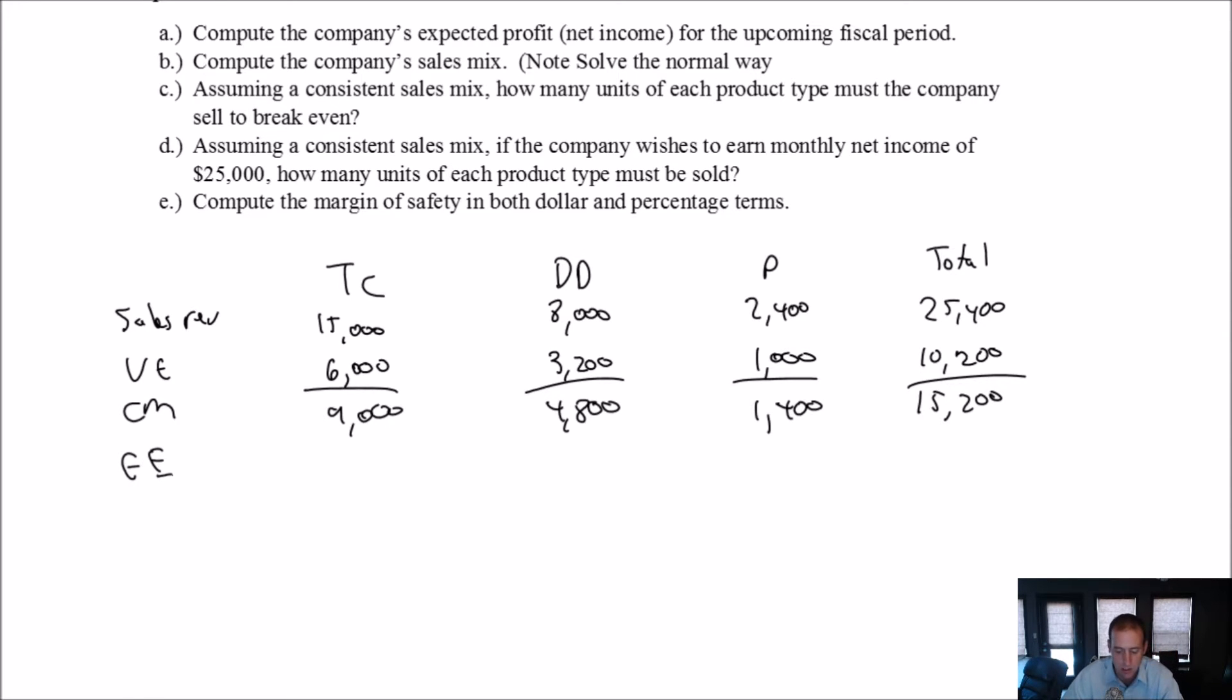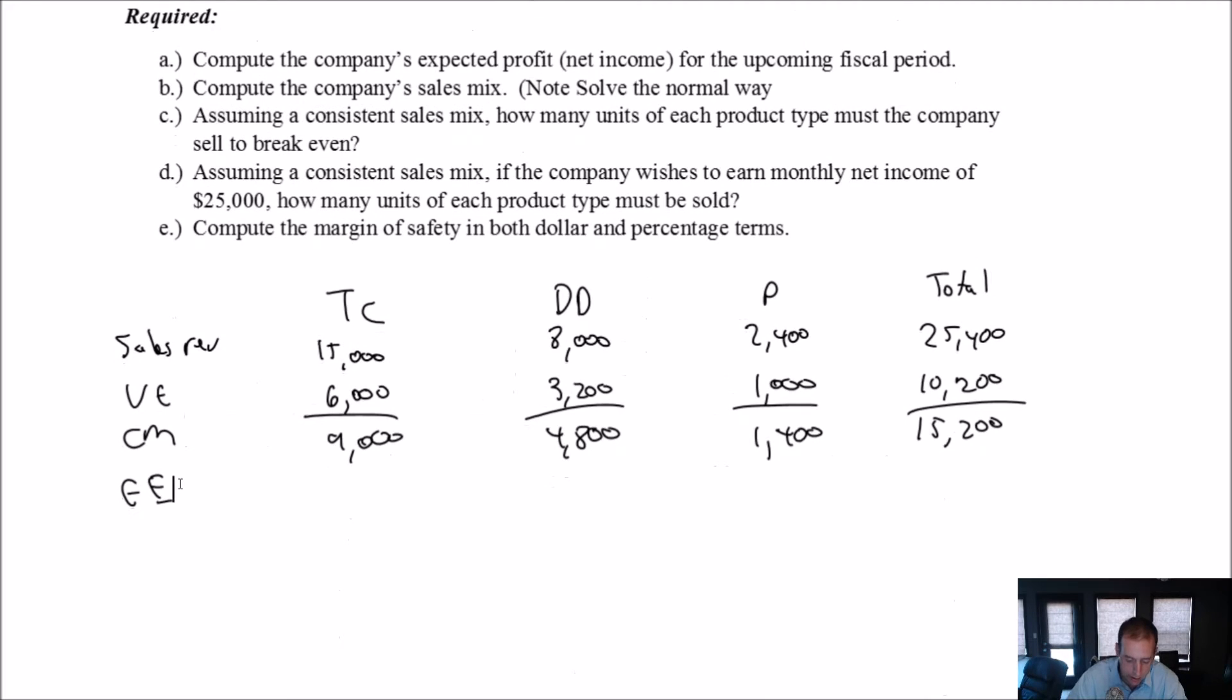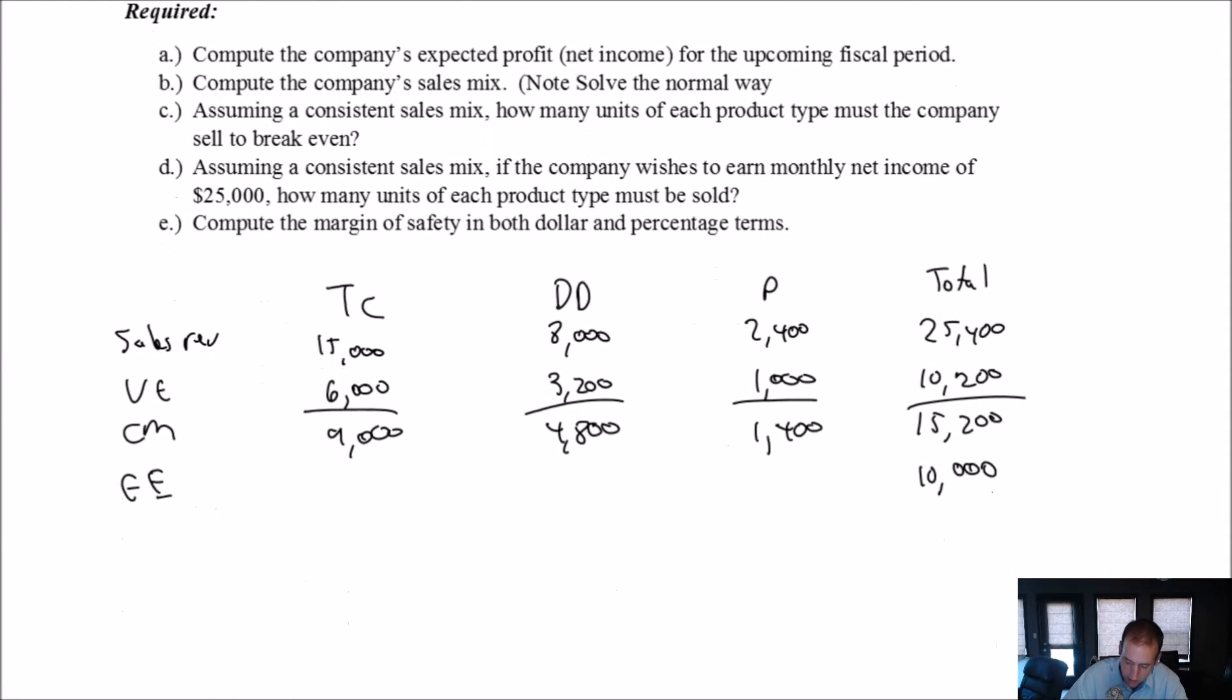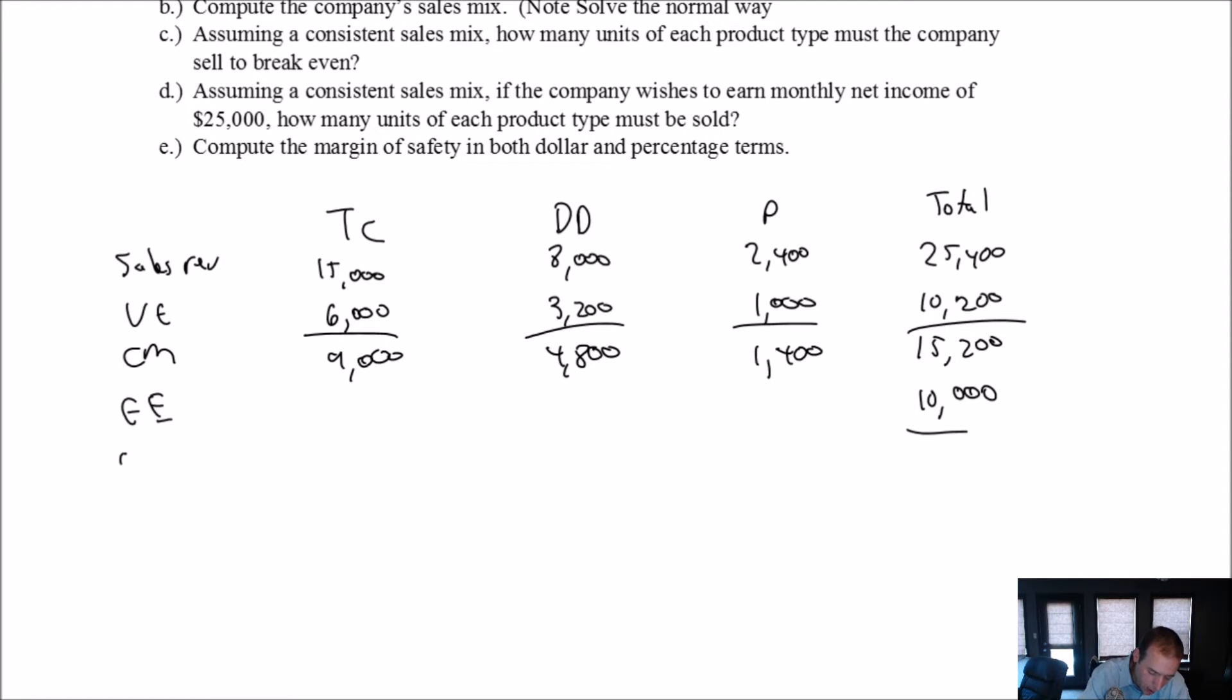Our company's fixed expenses, they don't break them down by product line, it's just $10,000 in fixed expenses. Kitchen costs, you're not going to typically break down to which kitchen costs apply to thin crust versus deep dish. Their fixed costs are just $10,000, meaning they have operating income of $5,200. Their income taxes are 20%. 20% of $5,200 is $1,040, so net income is $4,160.